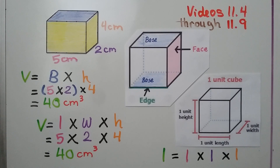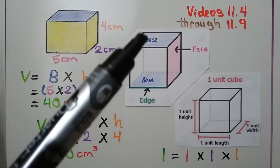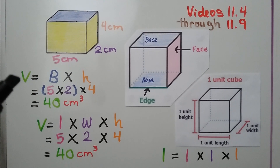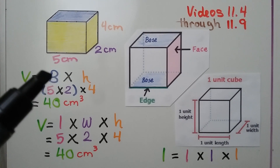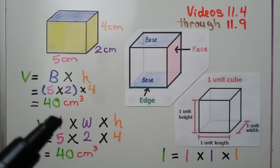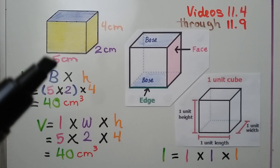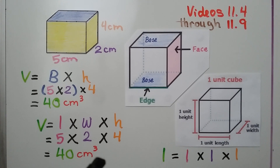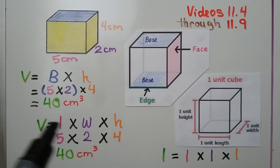We've learned that there are different bases, and we can use either one in the formula: volume equals base times height. We can also use volume equals length times width times height. The base is just the length times the width. We've learned to use a 3 as an exponent for cubic measures, because we have three dimensions.